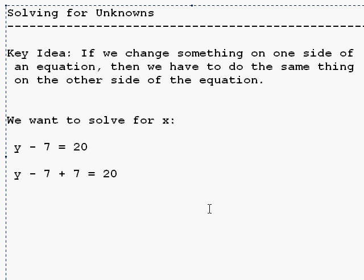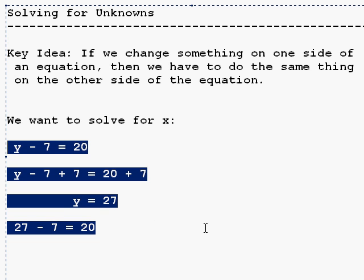Well, y minus 7 plus 7 is just y, and 20 plus 7 is 27. We take this and plug it back into our original equation and make sure it works. And that's how we keep ourselves from making a mistake. If we do make a mistake, we can go back and find what it is.